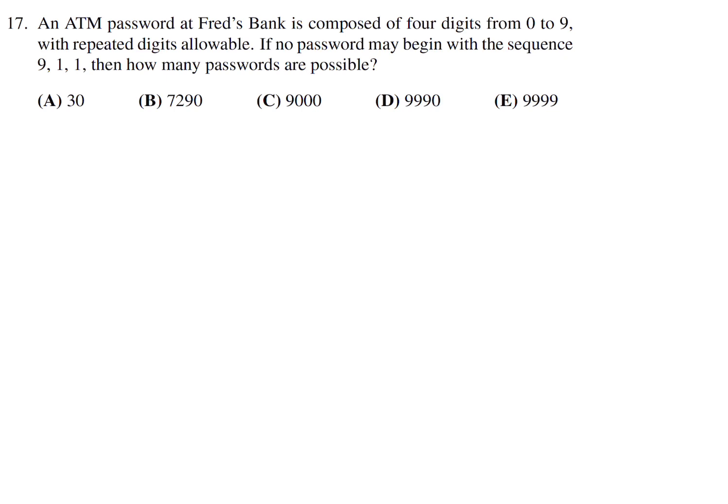An ATM password at Fred's bank is composed of four digits from 0 to 9, with repeated digits allowable. If no password may begin with the sequence 911, then how many passwords are possible? We have four possible digits. You can choose any digit from 0 to 9, and you can repeat digits. For every digit, you've got 10 possible choices, so the total is 10,000.